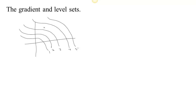Now we've just learned about the gradient. The gradient was telling us the direction of steepest descent — the gradient actually points in the direction that you should go to get steepest descent. Now if you're on a level curve, the fastest way to get to a higher level would be to go perpendicular to the level curve. It turns out that the gradient of f is actually perpendicular to the level curves and the level sets.